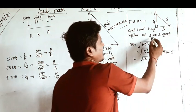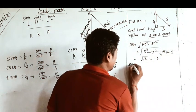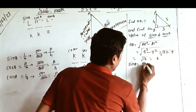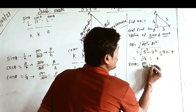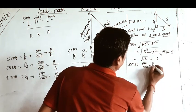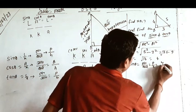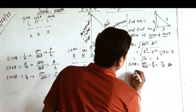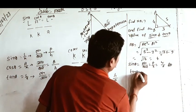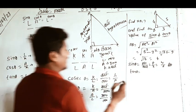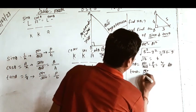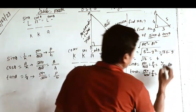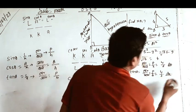Now we have to find sin theta and tan theta. Sin theta is equal to p by h, I will write it on the CBSE board, perpendicular by hypotenuse, which means 4 by 5. This is the answer. After that, tan theta is p by b, which means 4 by 3. So this is the answer.